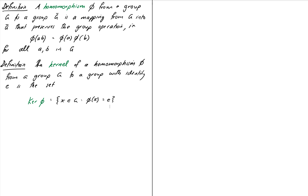The kernel of a homomorphism is the set of all elements in a group that map to the identity of the other group. We denote it: kernel of phi is the set of all x in G such that phi of x equals the identity. These are the two new definitions we need to become familiar with, so let's test this on some examples to get a feeling for how homomorphisms work.